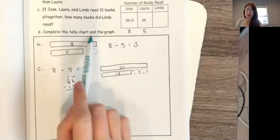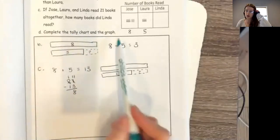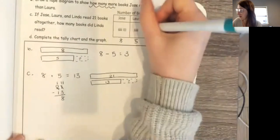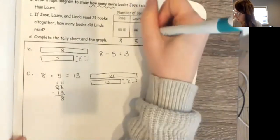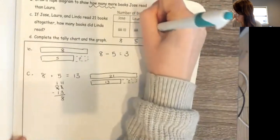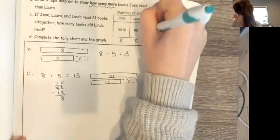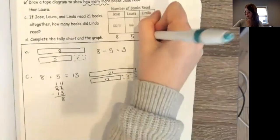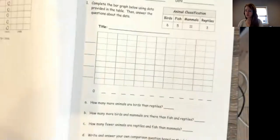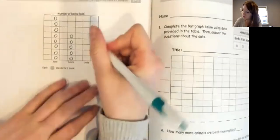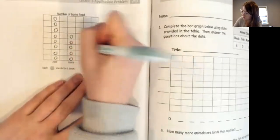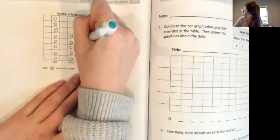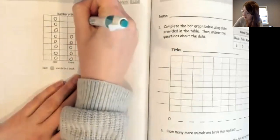So for D it's gonna ask me to complete the tally chart and the graph. So first what I need to do is fill in how many Linda read. So I know Linda read eight: 1, 2, 3, 4, 5, 6, 7, 8. And then on the back I'm gonna fill in her eight circles for her eight books: 1, 2, 3, 4, 5, 6, 7, 8.